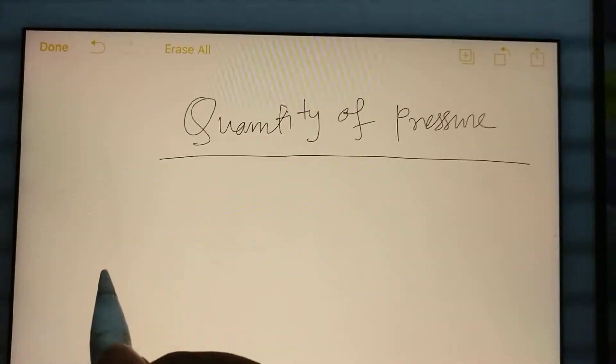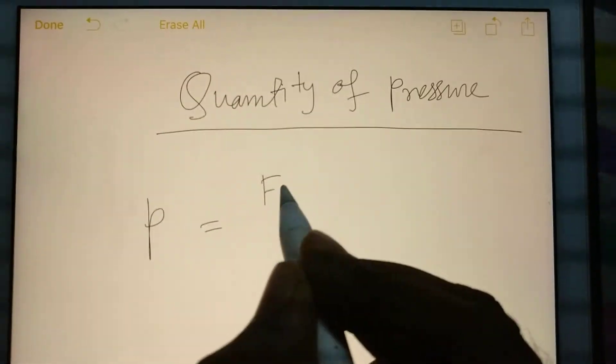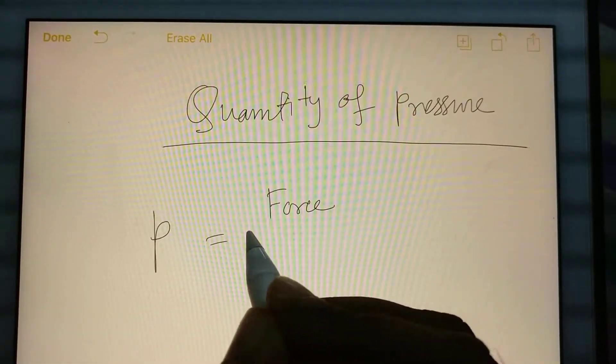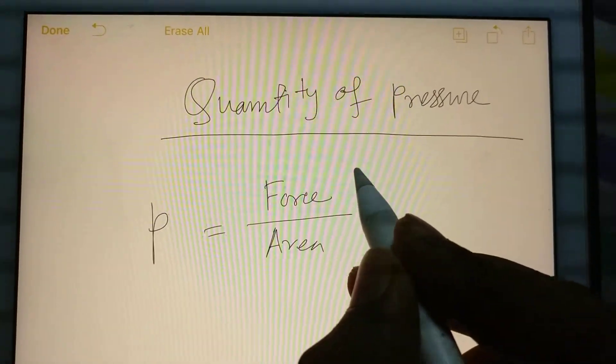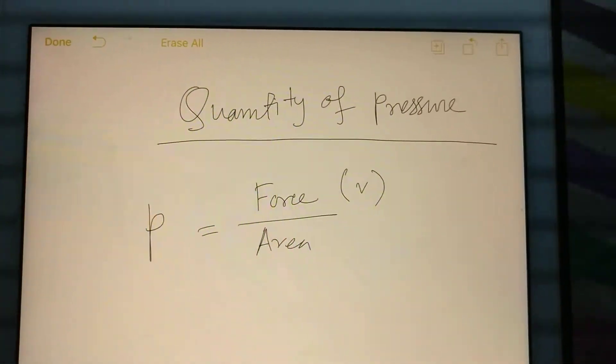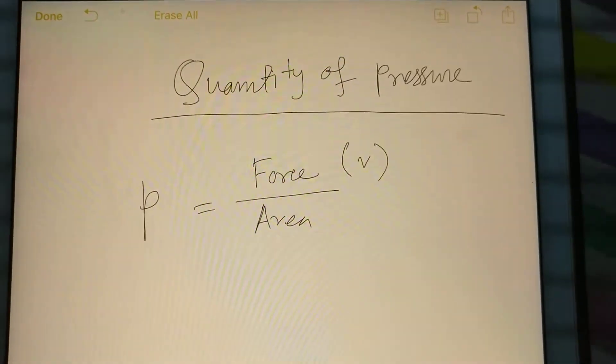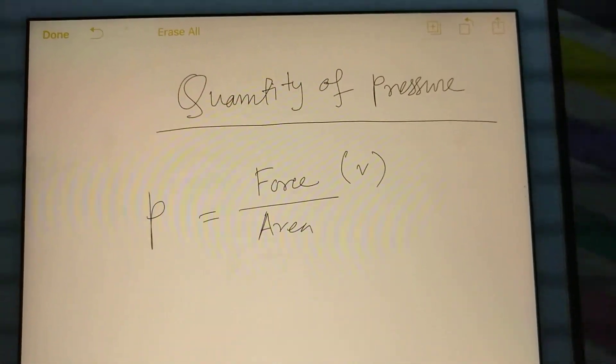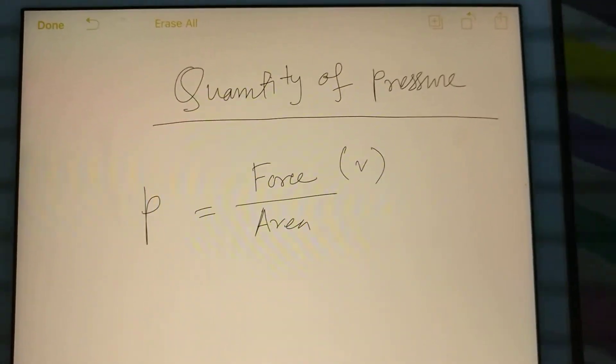We know that pressure is equal to force per area, where force is a vector quantity. So we can say this is vector, but this is not a vector quantity. Then what kind of quantity is this?